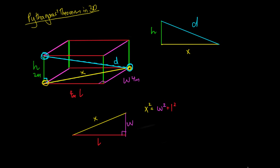We can also see that we would have another right-angled triangle. It would have a height of h, a bottom length of x, and then this diagonal d as the hypotenuse. So if we want to use Pythagoras here, we can say that d squared is equal to h squared plus x squared.